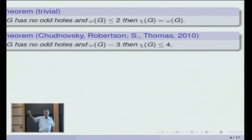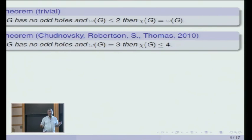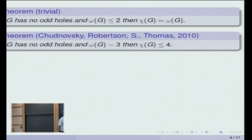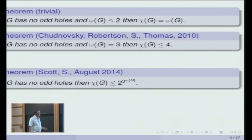You assume it contains the complement of C7, then try to figure out how all the rest of the graph can attach to it, and you can actually give a construction. The later cases for omega at least 4 were all open still. Anyway, the theorem is: the chromatic number is at most 2 to the 3 to the omega. That's not bad.